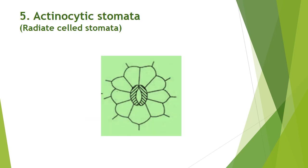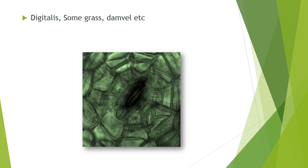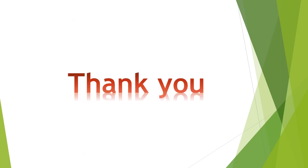The last type is actinocytic stomata, also known as radiated-cell or radial-cell stomata. Here, subsidiary cells are arranged around guard cells in such a way that the stomata as a whole gives a flower-like structure — they are arranged in a radial pattern. This stomata is found in Digitalis, some grasses, and Datura. In the actual image, you can see that in the center there is the stoma with guard cells, and around them the subsidiary cells are arranged giving a flower-like appearance. This concludes the topic of stomata and types of stomata.